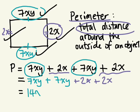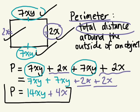What's 7xy plus 7xy? 14xy. And what's 2x plus 2x? 4x. And that's it. This is a simplified expression of the perimeter.